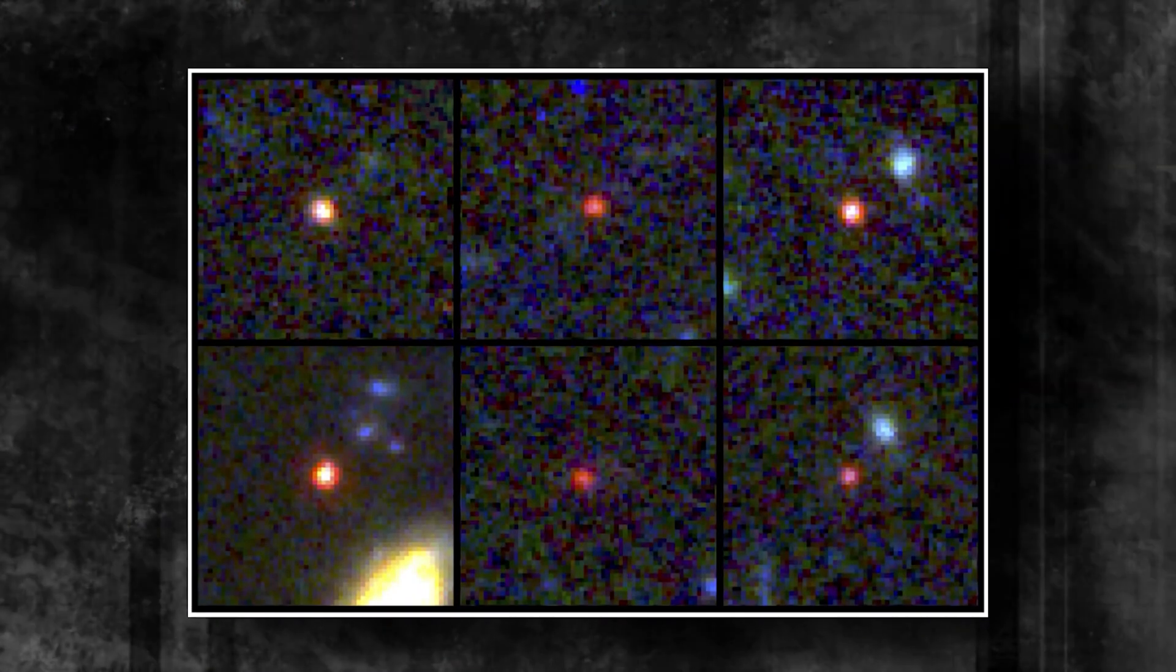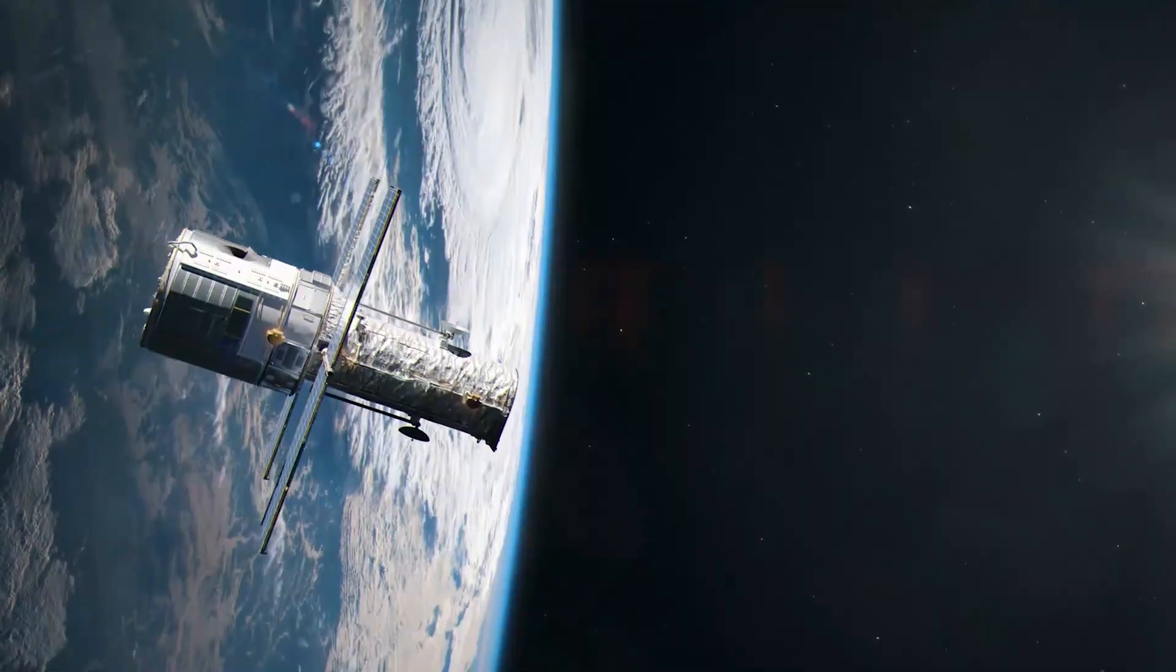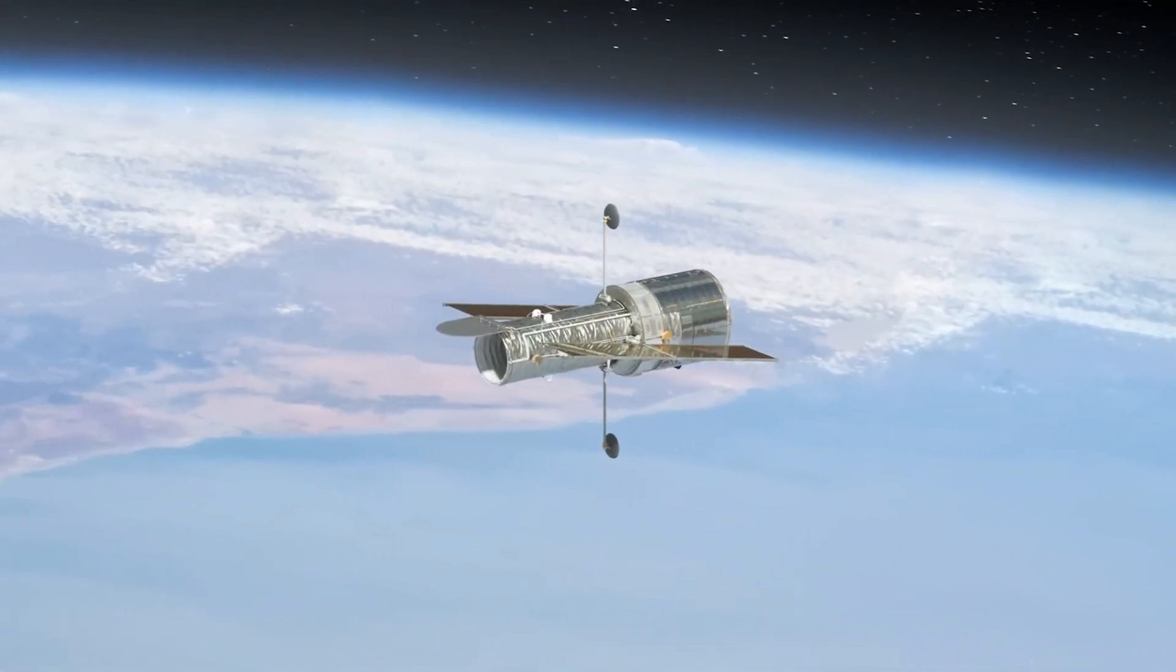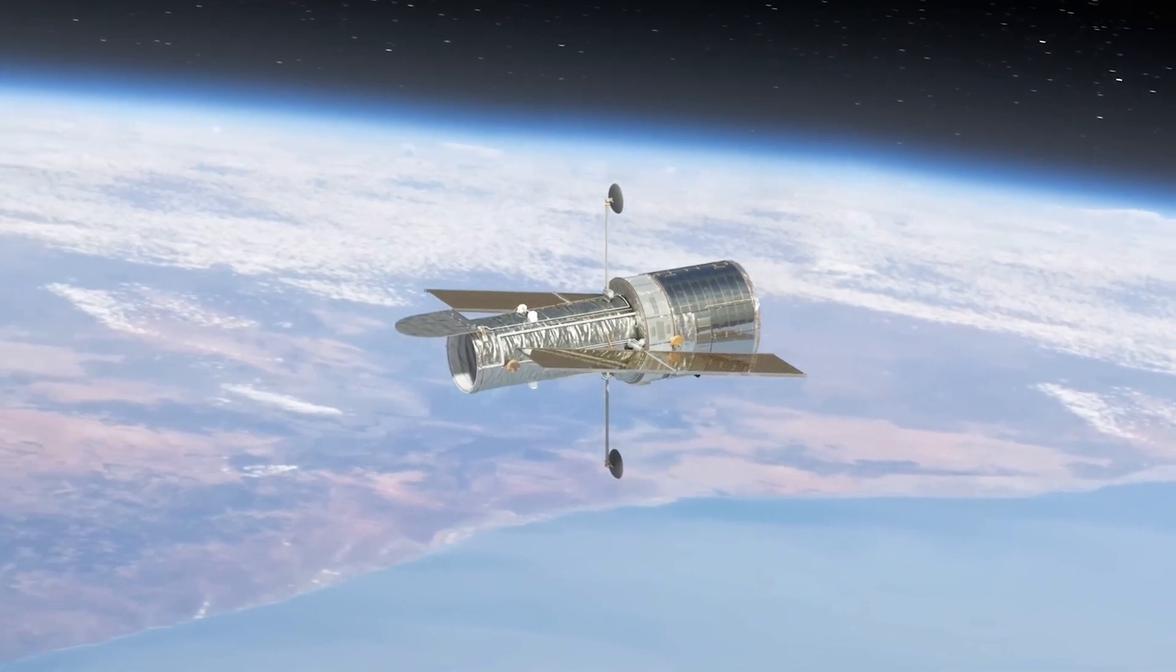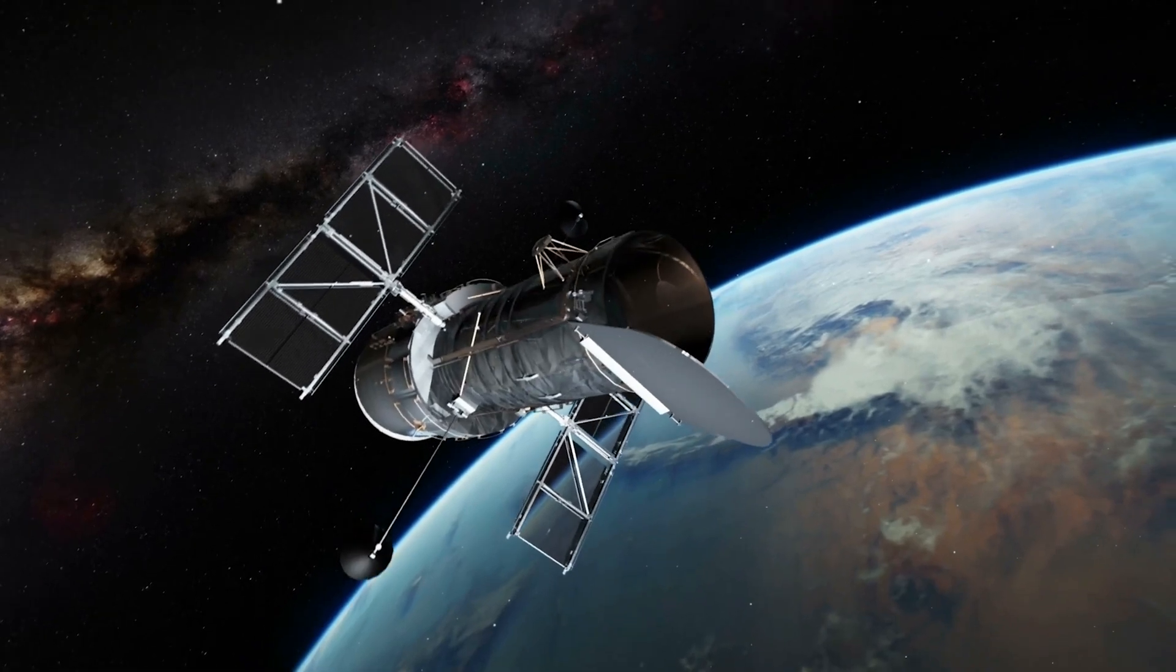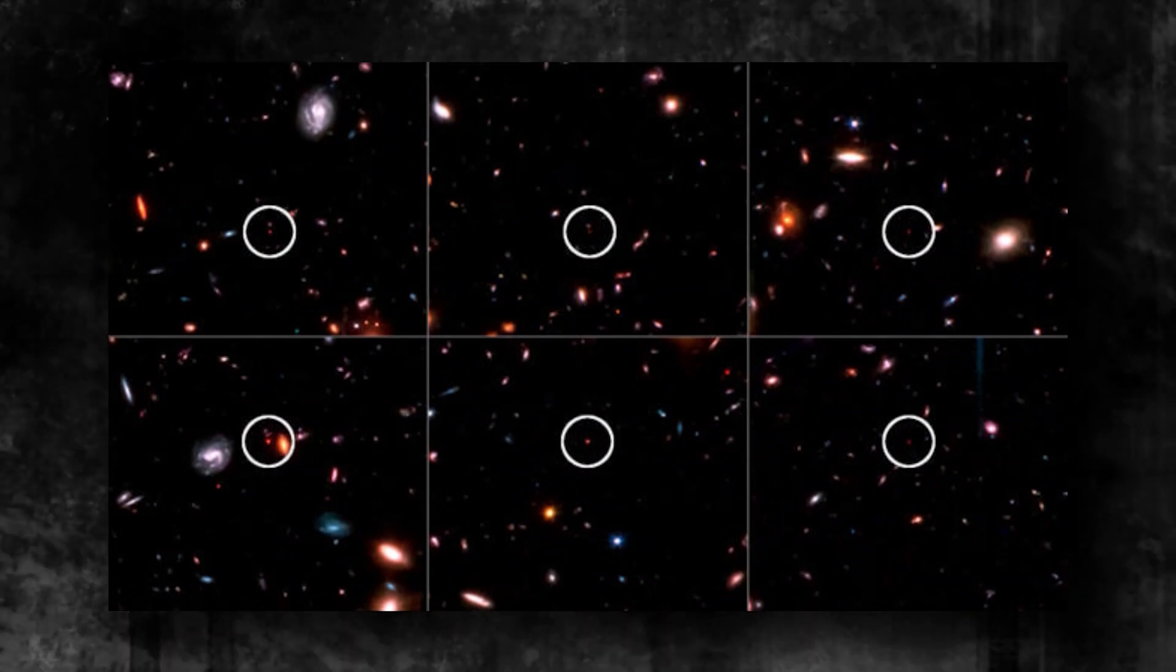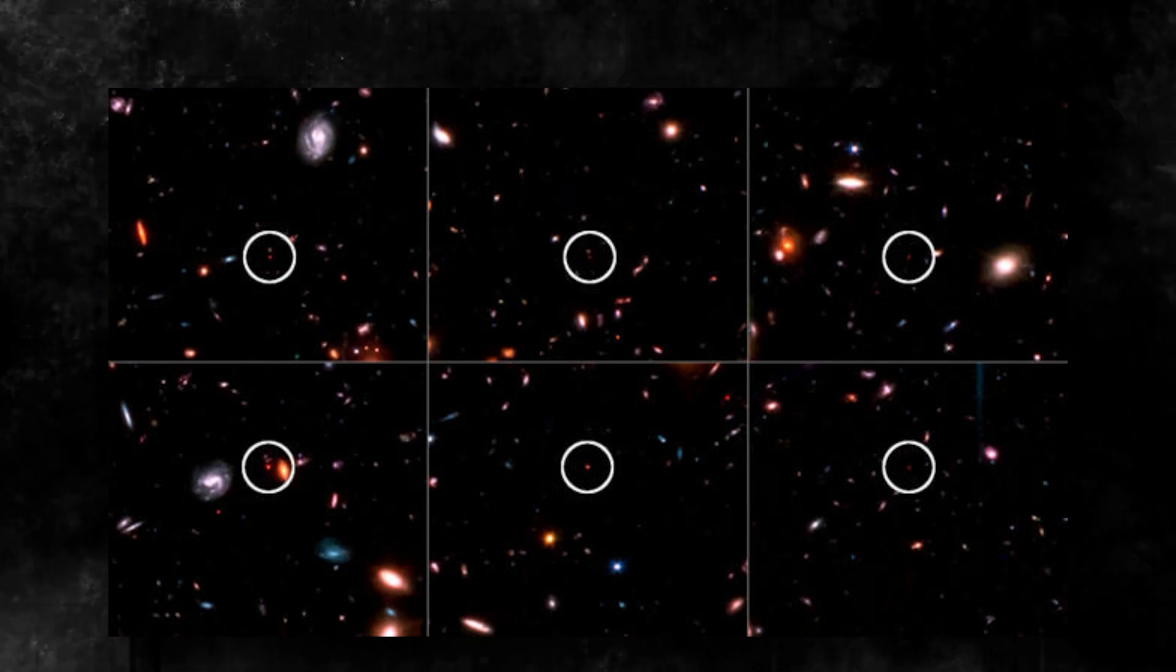The Webb telescope made observations last summer of a region of the sky close to the Big Dipper that had previously been captured by the Hubble Space Telescope. However, Webb sees primarily in the infrared, whereas Hubble sees primarily in the visible spectrum, giving it a new perspective on a region of space that Hubble had previously found nothing particularly noteworthy. The new study's results were intriguing. Six blotches of extremely brilliant red yet fuzzy light stood out from the background image, which was otherwise ordinary.